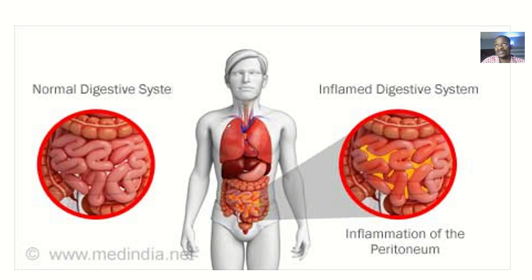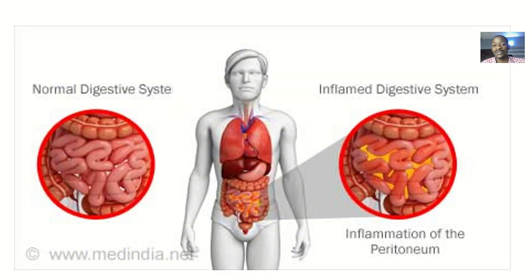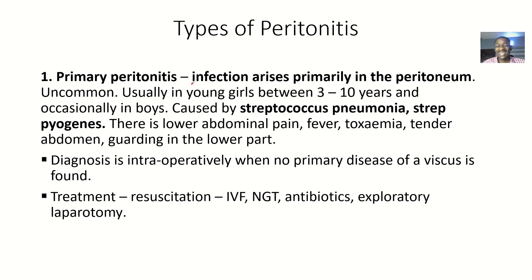Peritonitis is inflammation of the peritoneum, which is a tissue that lines the abdominal contents. The first type we'll look at is the primary one. After the primary, we go into the secondary ones. In-depth lectures on the secondary causes of secondary peritonitis will come subsequently. This is an overview lecture.